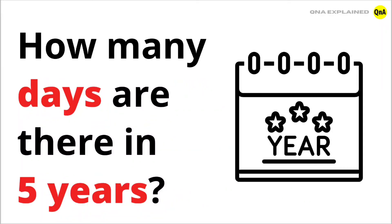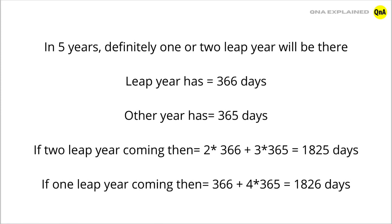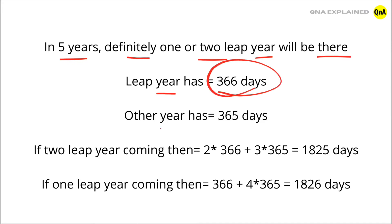How many days are there in 5 years? In 5 years, definitely 1 or 2 leap years will be there. A leap year has 366 days, and other years have 365 days.